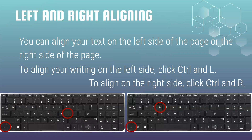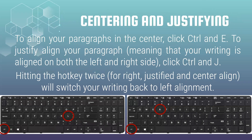Left and right aligning. If you want to align your items, you're going to select control L to align to the left, or if you want to align to the right, you're going to tap control R. Centering and justifying. To align your paragraphs in the center, select control and E. To justify or align your paragraph — meaning it's aligned on both the left and right side — select control and J.